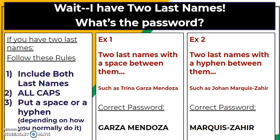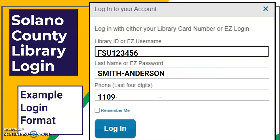If you have two last names, you need to follow these rules. You're going to include both last names in all caps, with a space or a hyphen in between depending on how you normally write it. For example, Trina Garza Mendoza with a space would be GARZA MENDOZA in all caps. If you have a hyphenated last name such as Johan Marquis-Zahir, you would type MARQUIS-ZAHIR in all caps with no spaces.